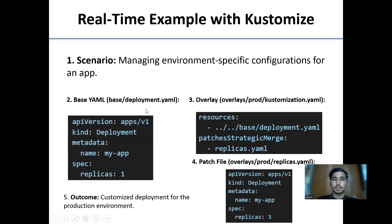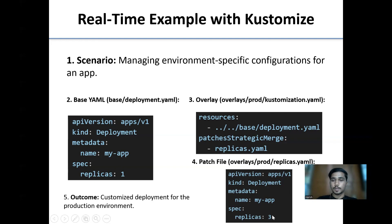Real-time example with Kustomize — the scenario is managing environment-specific configurations for an app. The base file is deployment.yml, with kind Deployment and replicas set to one. The overlay is a kustomization.yml at the production level, containing resources and a strategic merge patch. The patch file replaces replicas from one to three. The outcome is a customized deployment for the production environment.